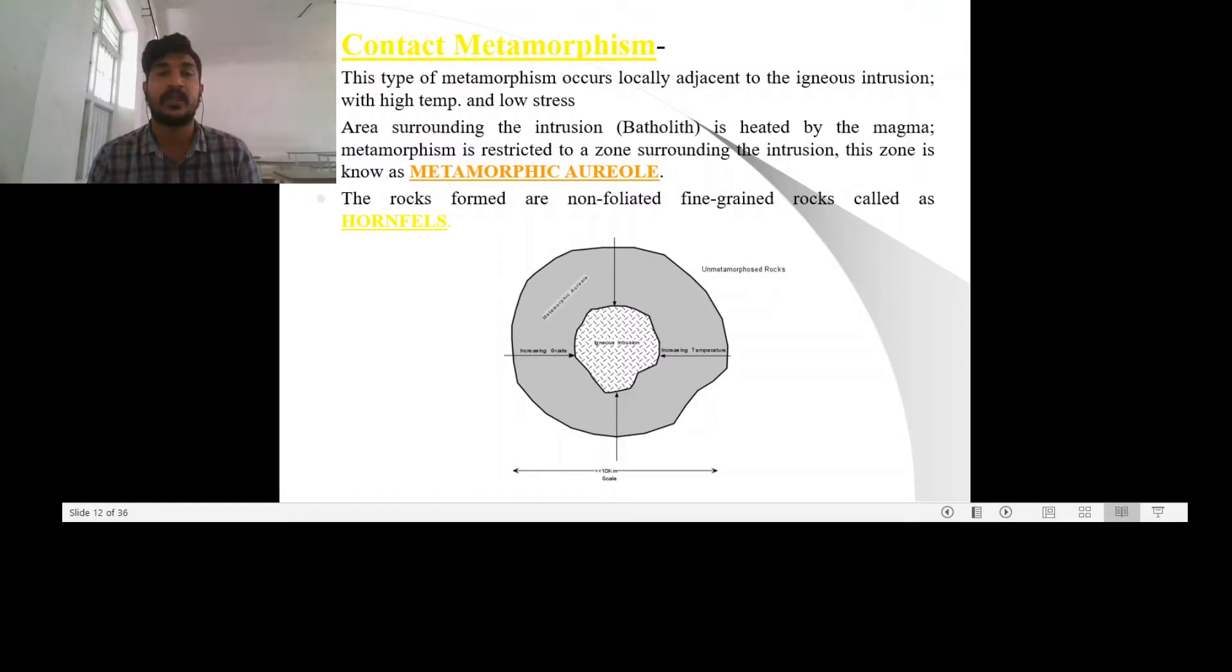And further away from the intrusion, the heat will be the primary cause. And the zone of contact aureole is entirely dependent on the size of the intrusion as well as the nature of fluid present in the intrusion. If fluid is absent, the contact aureole will also be very small.